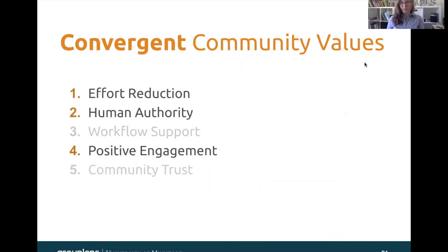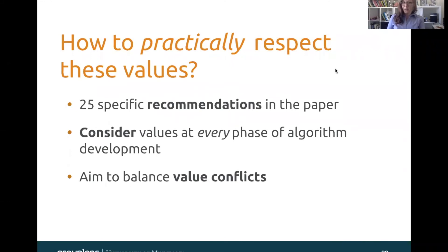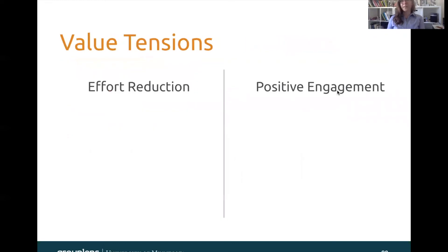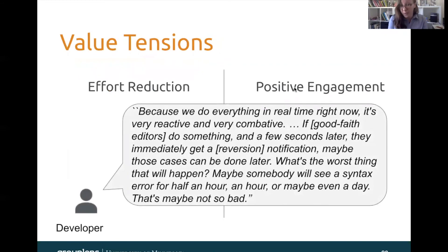So these are the five values that emerged from our study — but how can we practically respect these values? There are 25 specific recommendations in the paper, but at a high level we need to explicitly consider these values at every phase of algorithm development and aim to balance value conflicts when they arise. For example, there's a value tension between effort reduction and positive engagement: it's very easy and takes less effort to just revert an edit and make it go away, but that might have negative consequences for the user who created that edit. As one developer put it, because we do everything in real time right now it's very reactive and very combative. If good faith editors do something and a few seconds later they immediately get a reversion notification — maybe those cases can be done later. What's the worst thing that will happen? Maybe somebody will see a syntax error for half an hour, an hour, or maybe even a day. That's maybe not so bad.